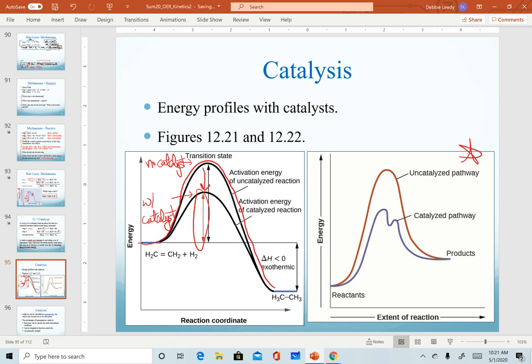A more accurate graph of the difference would look actually like this one, where our higher graph is the uncatalyzed reaction and the lower one, because when we add a catalyst, we change the mechanism. We often have multiple steps in here, so multiple activation energies, but they're all lower than the original reaction.